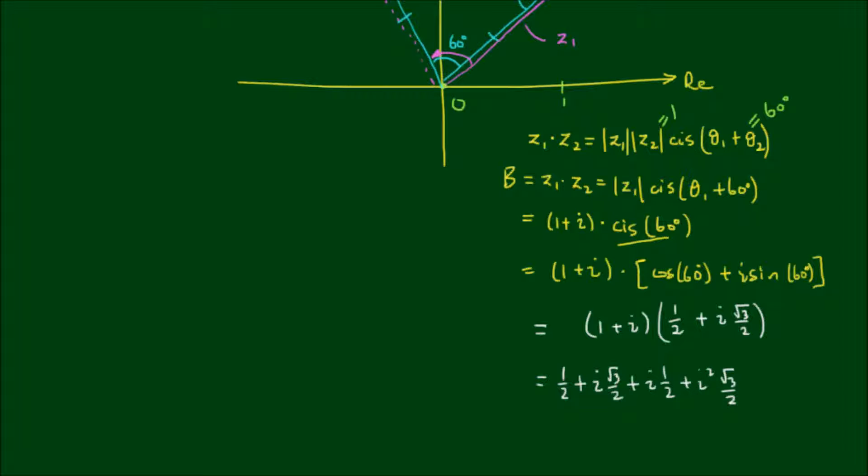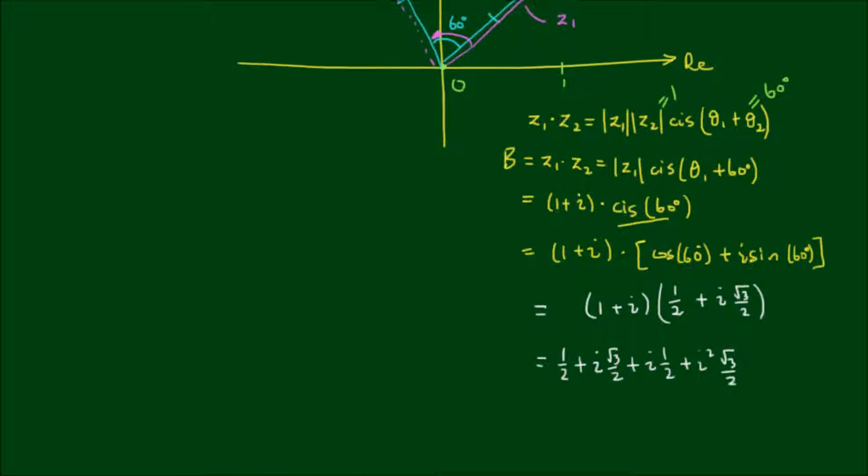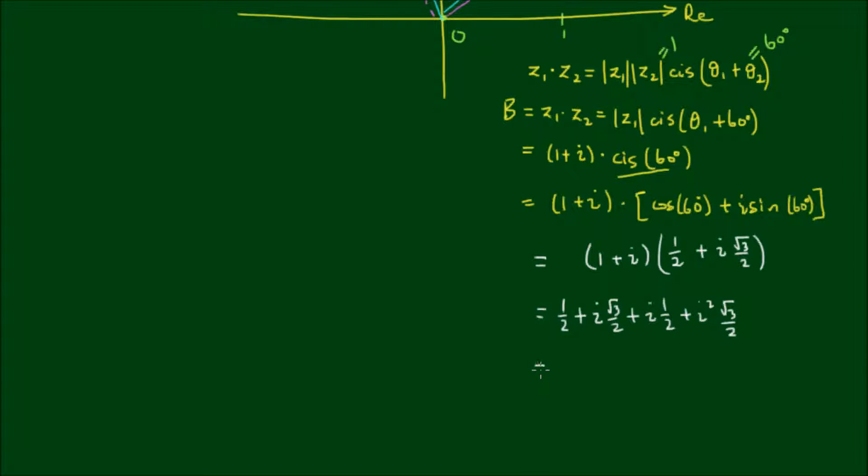And of course i squared is equal to negative 1. So the real component when I group them together is 1 minus root 3 all over 2. And the imaginary component is i by 1 plus root 3 over 2.